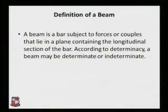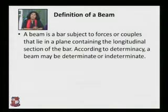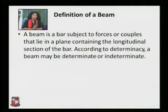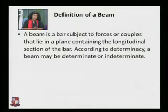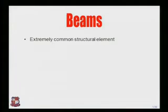A beam is subjected to different types of forces — it may be a UDL, a GVL, or a point load. When subjected to forces, there is development of a moment or a couple. A beam is called determinate or indeterminate depending on the conditions of equilibrium and support conditions.